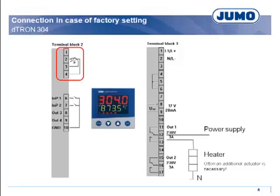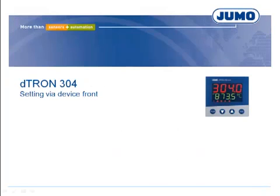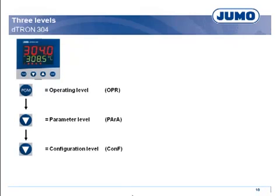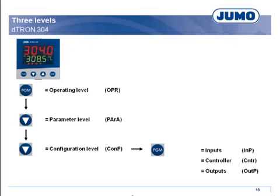In the case of another application, the setting of the controller is possible in the configuration level. The compact controller has got three levels: operating level, parameter level and configuration level. For many applications, the configuration of the submenus inputs, controller and outputs is sufficient.